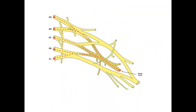Where is the origin of the radial nerve? It originates from the brachial plexus, with root values of C5 to C8 and T1.